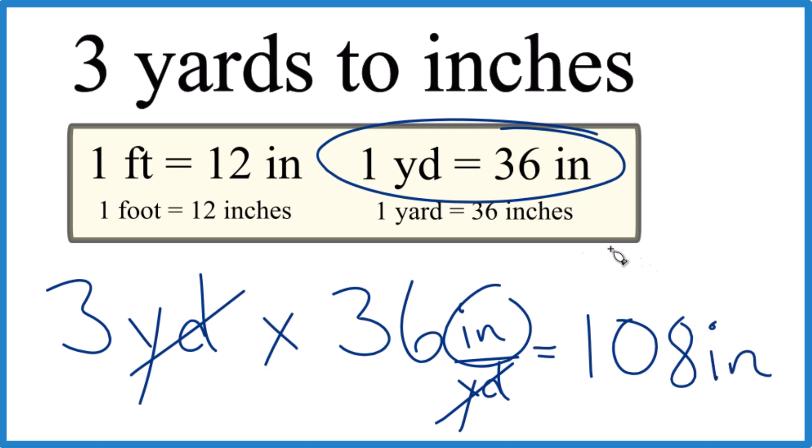So an answer to our question, three yards to inches, three yards, that equals 108 inches. And really the key piece of information right here is one yard equals 36 inches.